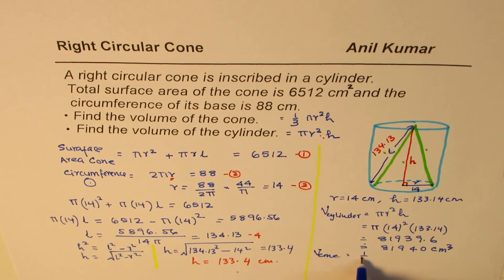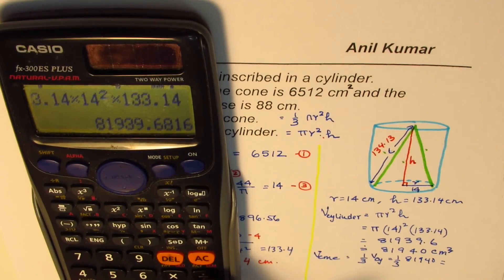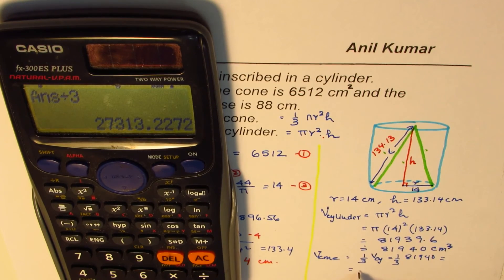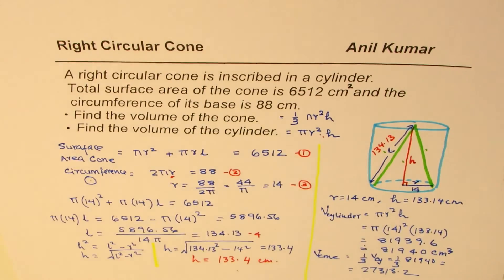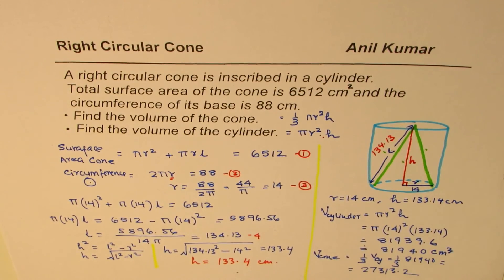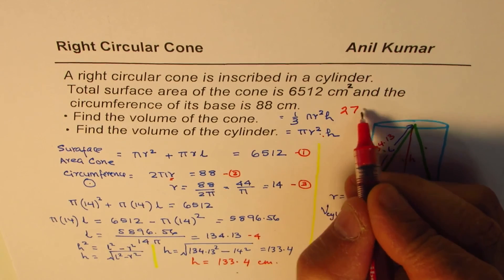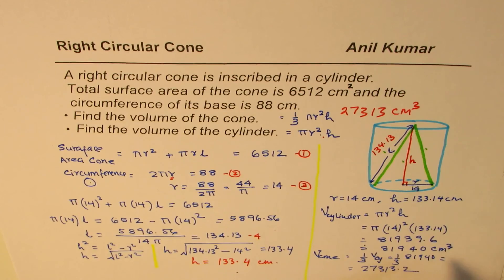Volume of the cone is one-third the volume of the cylinder, which is one-third of 81,940 = 27,313 cm³. Rounding to whole numbers, the volume of the cone is 27,313 cubic centimeters and the volume of the cylinder is 81,940 cubic centimeters.